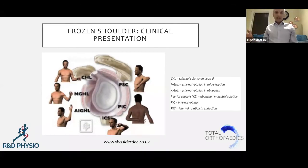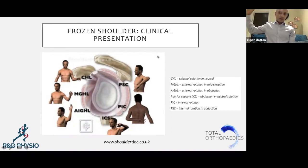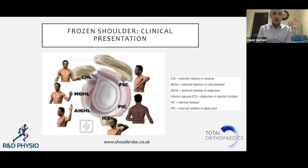When external rotation in neutral is gone, that's where your coracohumeral ligament has been affected. If you've got restriction of external rotation in mid elevation, then you've got your middle glenohumeral ligament, and then external rotation in abduction. This is a good test to do — whether someone can rotate outwards or inwards in abduction — and we'll show you that on a video. This shows you which capsular structures have been affected.